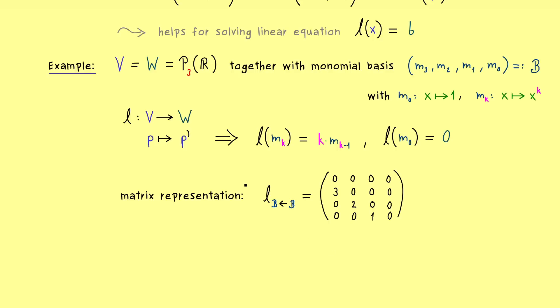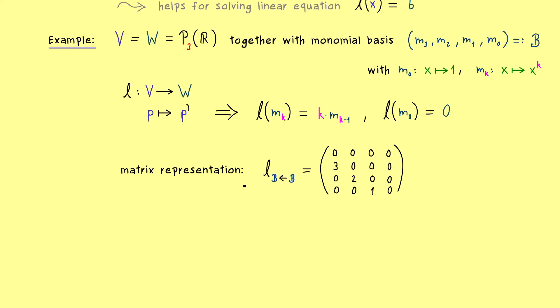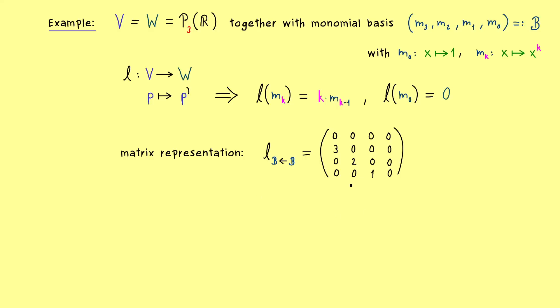And moreover M0 is sent to the 0 vector so we need a whole 0 column in the end. Okay, so there we have it. This is the matrix representation of our linear map L with respect to the basis B.